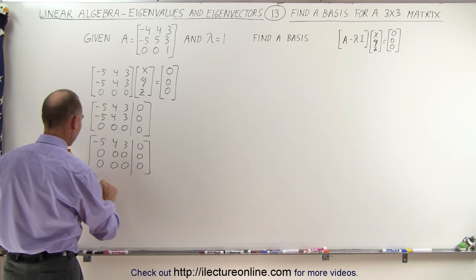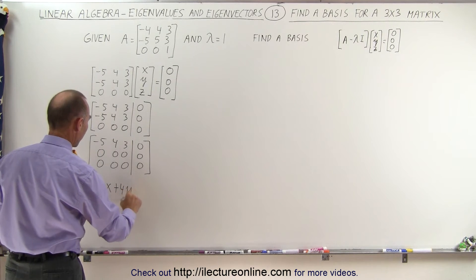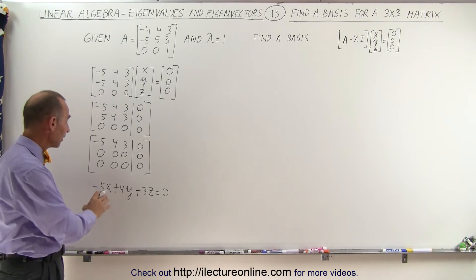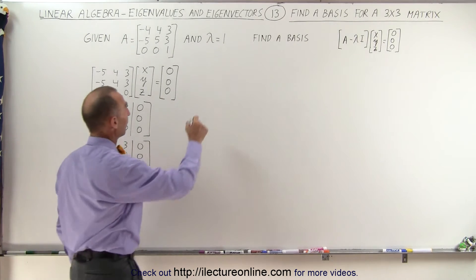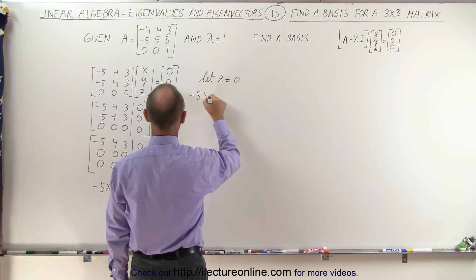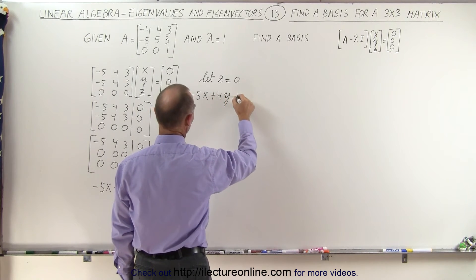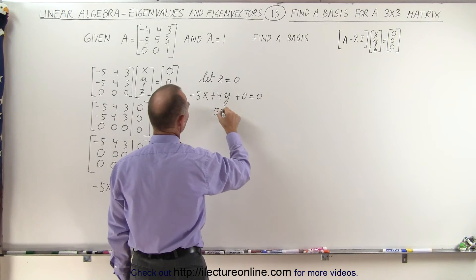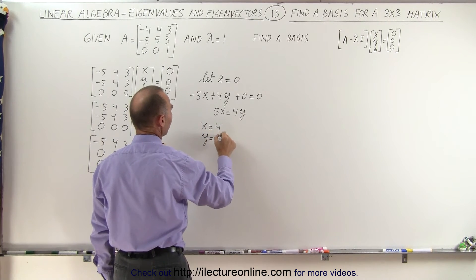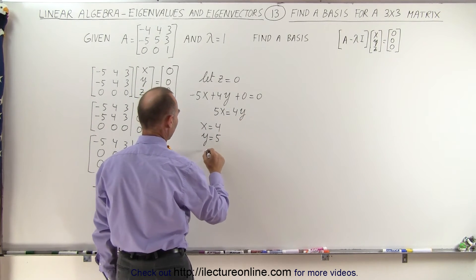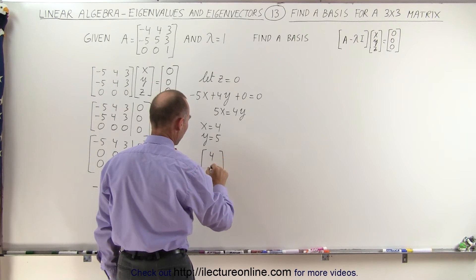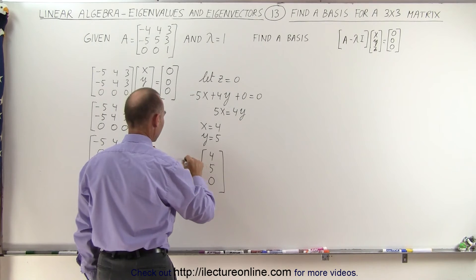Which means in the end that we have minus 5x plus 4y plus 3z is equal to 0. Now, how do we find the eigenvectors — the values x, y, and z? We're going to let z equal 0. When we let z equal to 0, we get minus 5x plus 4y equals 0, or 5x equals 4y. That means x is going to be equal to 4, and y is going to be equal to 5 for this to be true. So we have our first eigenvector v1: x equals 4, y equals 5, and z equals 0.